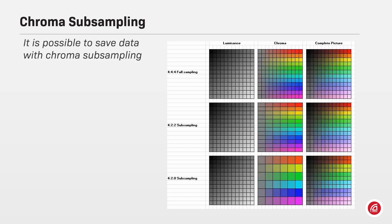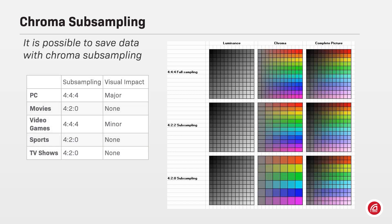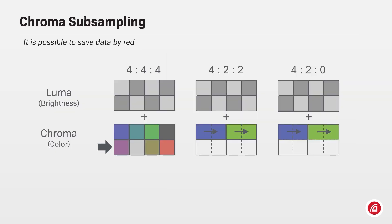It is also possible to reduce the amount of data by methods of chroma subsampling. Chroma subsampling is a type of compression that reduces the color information in a signal in favor of luminance data, in order to reduce bandwidth usage without significantly affecting picture quality. 444 represents no chroma subsampling used, whereas 422 has every other pixel duplicated and 420 has bottom pixels copying top pixels.